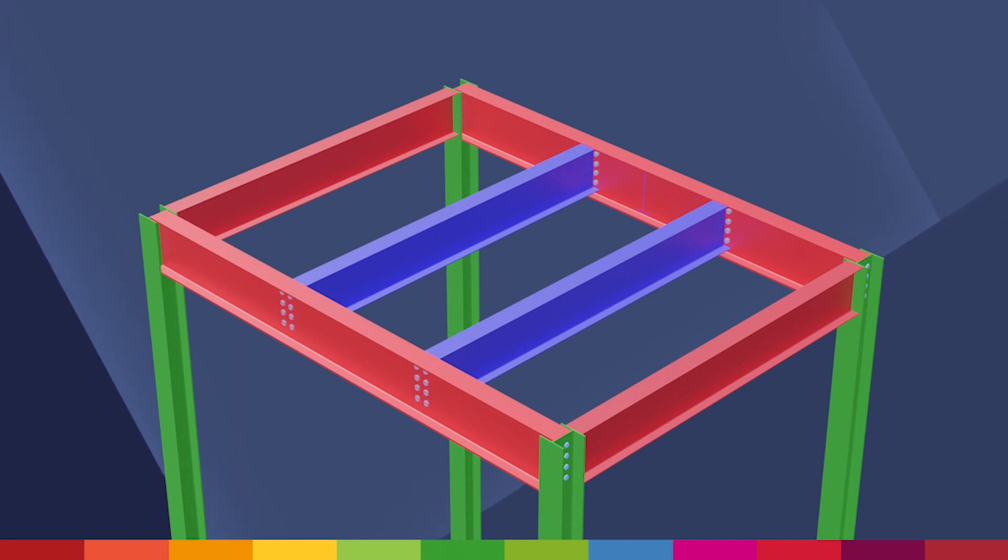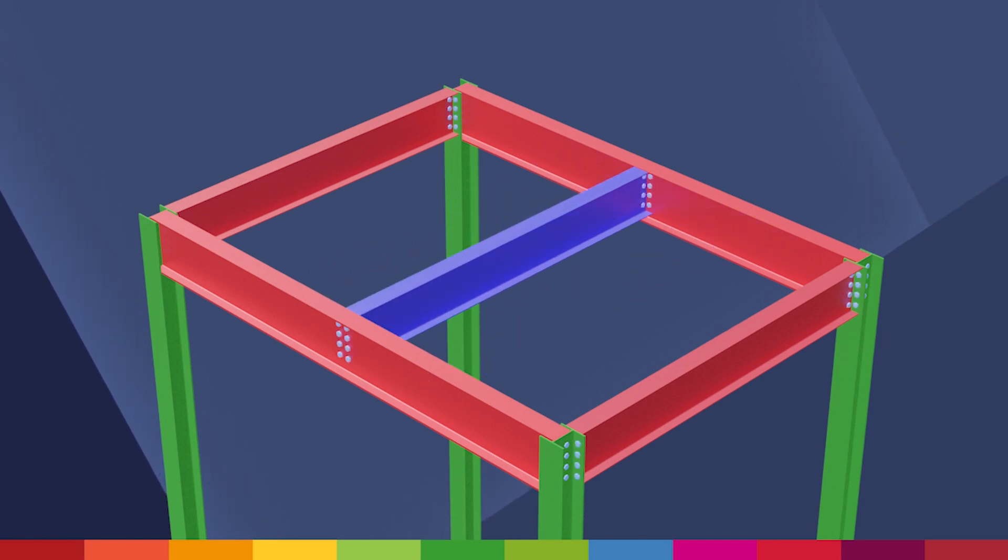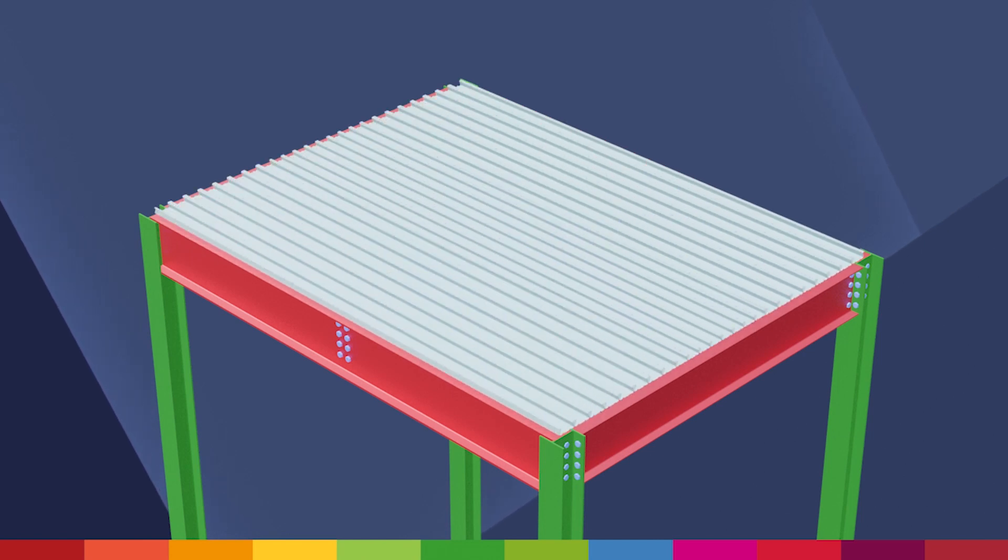For this scenario, we are basing the design on a double span bay with a single secondary beam. The steel floor deck spans across the beams for the concrete topping to follow.